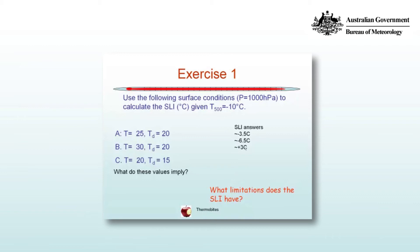Can you think of any limitations that SLI has? The SLI represents the buoyancy at 500hPa, or at 700hPa for the cold season, but it tells you nothing about the vertical distribution of buoyancy — for example, whether or not there is a strong inversion lower down. So on its own, SLI is insufficient. But nonetheless, as a broad brush stroke, it is a really useful diagnostic for thunderstorm forecasting.